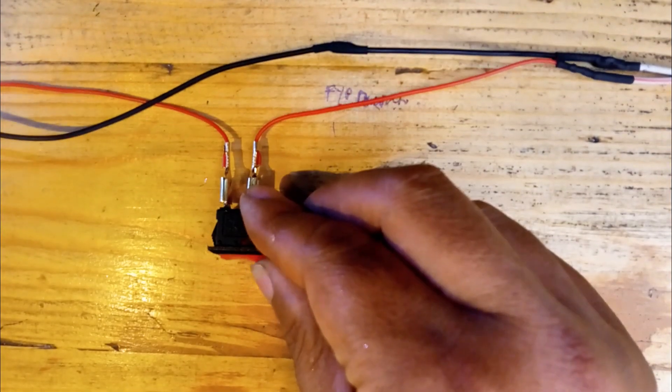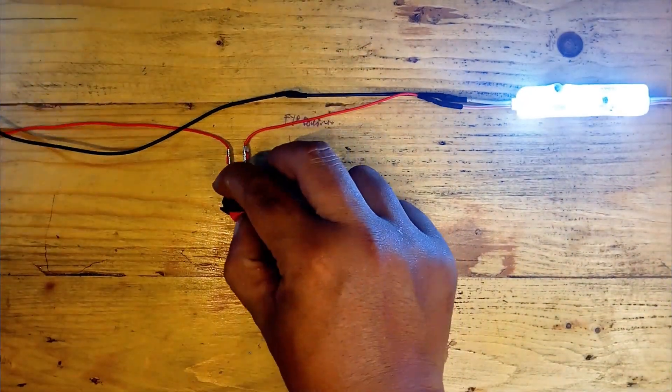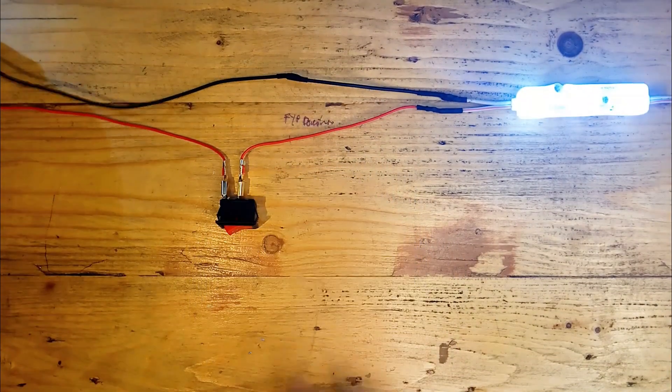And that's it. You've just learned how to wire a basic DC switch circuit for a light or motor. This same principle can be applied to many other DC powered devices.